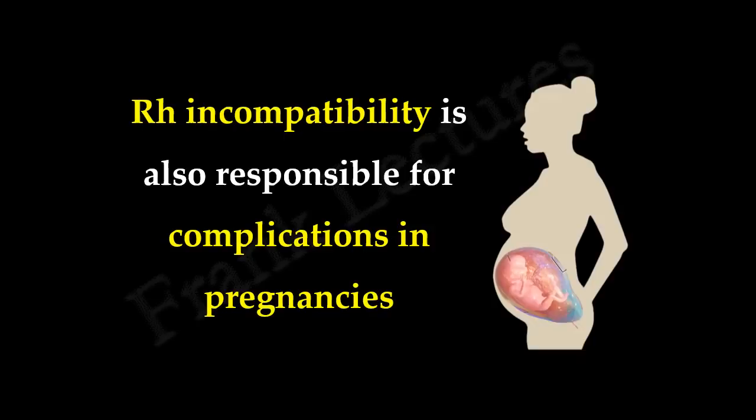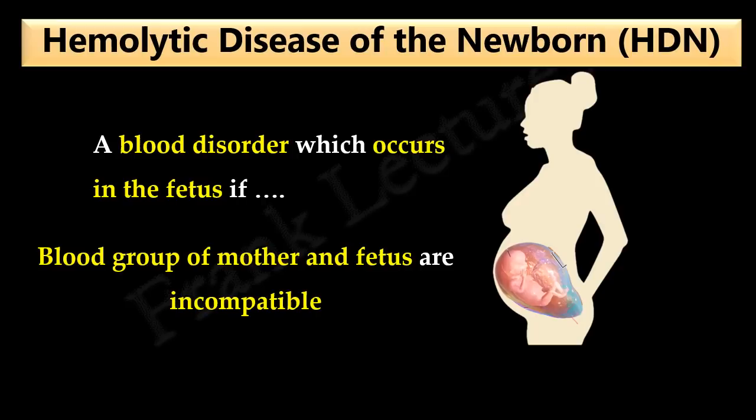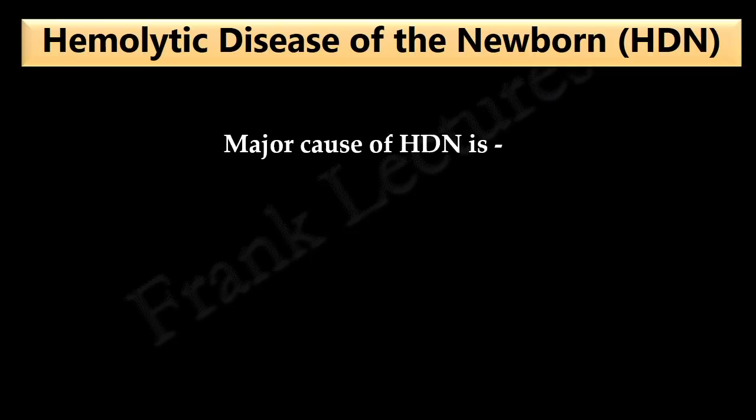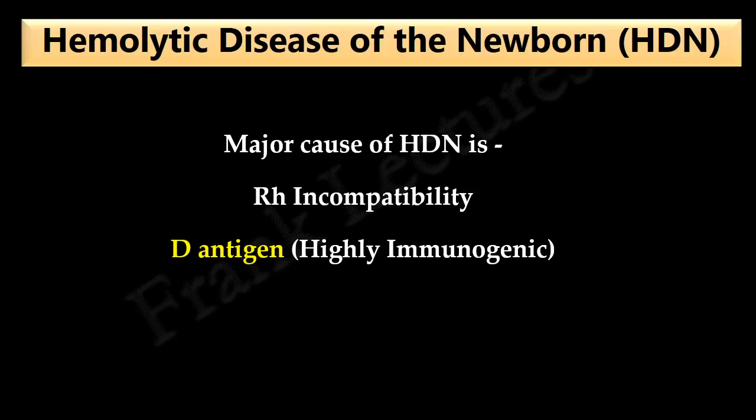Besides these blood transfusion reactions, RH incompatibility is also responsible for complications in pregnancies. Hemolytic disease of the newborn is a blood disorder which occurs in the fetus if the blood group of the mother and the fetus are incompatible. The major cause is RH incompatibility — more specifically, the RH D-antigen which is highly immunogenic. This disease used to be a major cause of fetal loss and death among newborn babies.